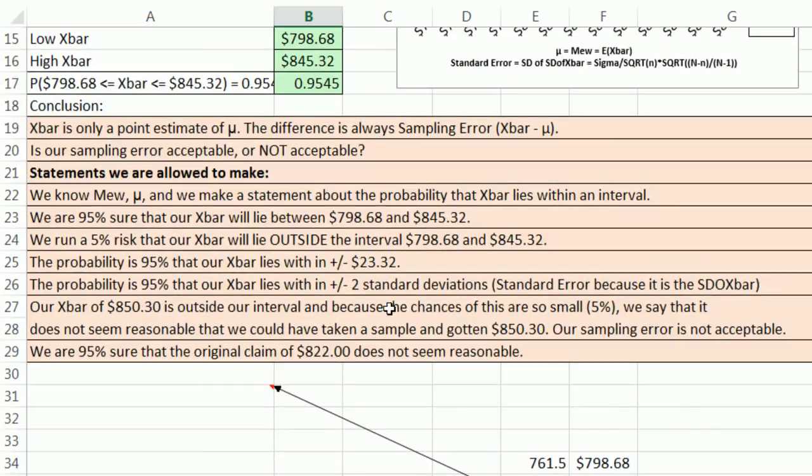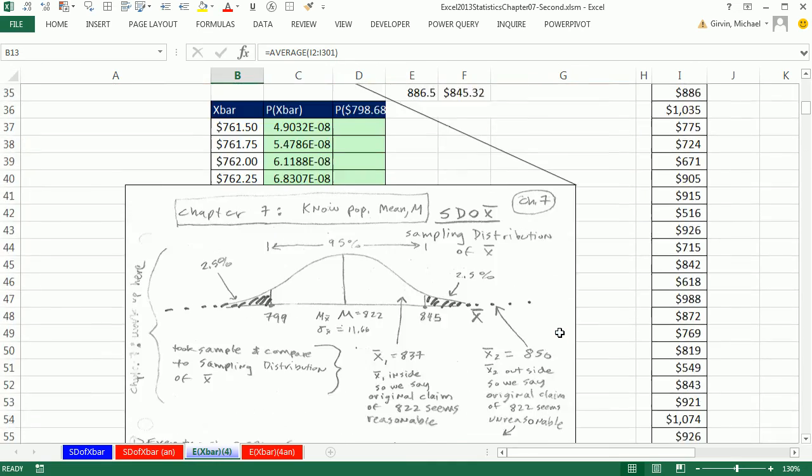Now we could say this a few ways. We are 95% sure that our x-bar will lie between about 799 and 845. We also can say to explicitly recognize that there's some risk. We run a 5% risk that our x-bar will lie outside the interval 799 to 845. Down here, our x-bar of 850 is outside our interval. And because the chances of this are so small, like 5%, we say that it does not seem reasonable that we could take a sample and have gotten 850. Our sampling error is not acceptable.